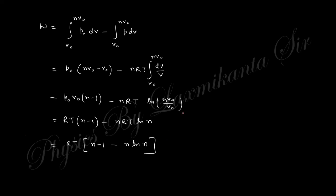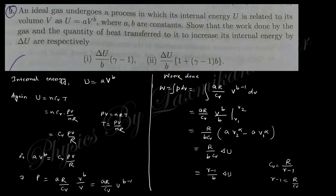An ideal gas undergoes a process in which internal energy U is related to volume V as U = A·V^b, where A and B are constants. You need to find the work done by the gas and heat transfer for an increase in internal energy dU. Since U = nCvT, we get T = pV/nR, so Cv·p·V/R. The pressure expression is derived from U = A·V^b, and work W = ∫p·dV.